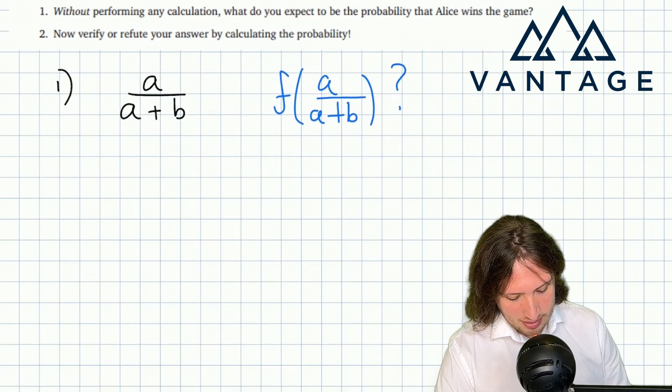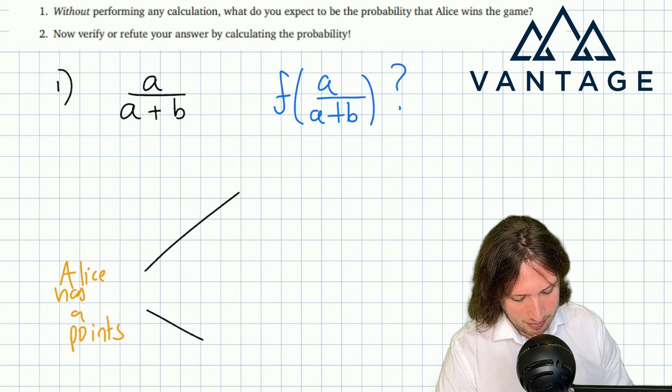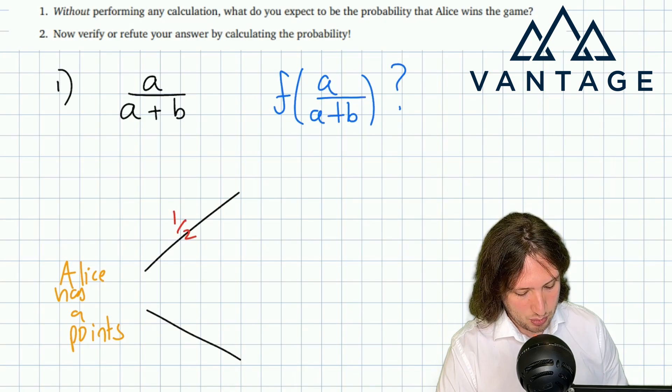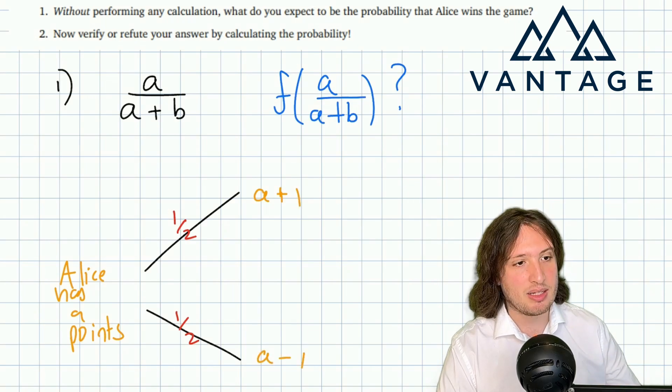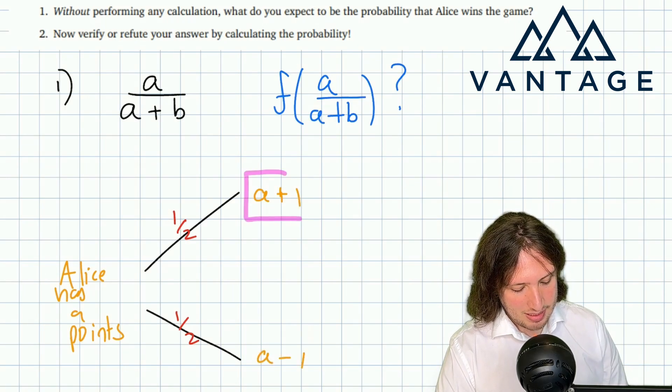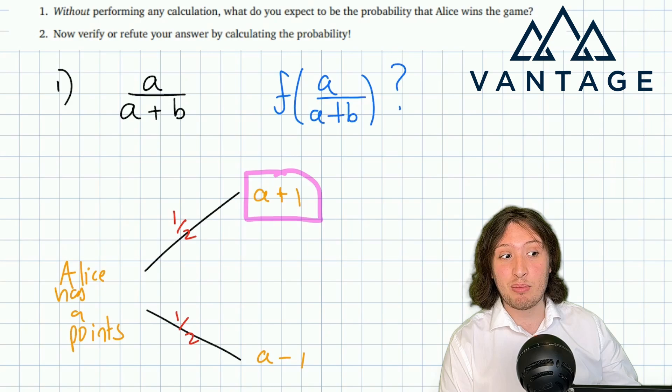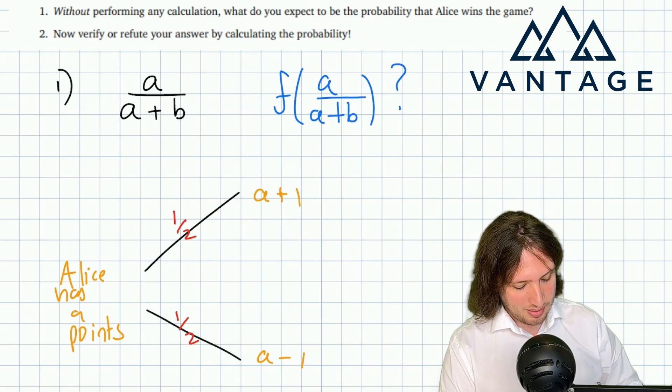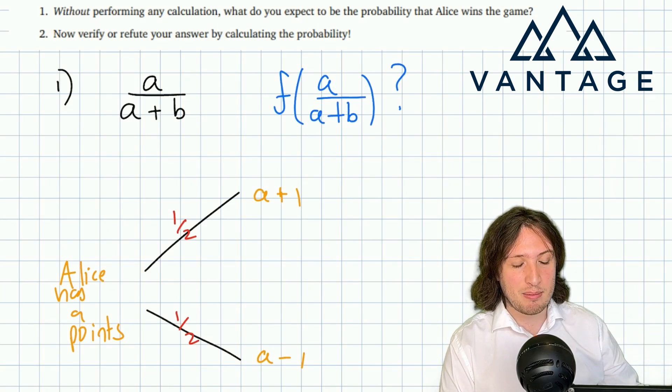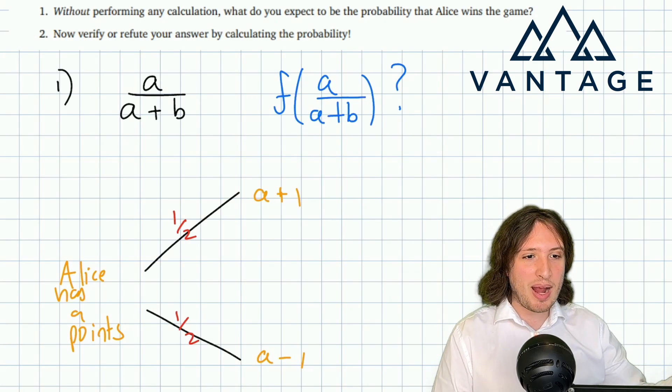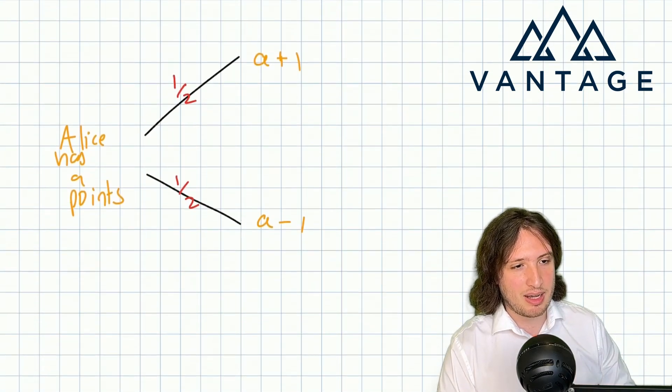In particular, at the start of the game Alice has a points. On that first round there are two things that can happen: Alice can lose a point or Alice can gain a point. I'll write a+1 and a-1 for short. What I'm saying is from that point it's like the original version of the game just where Alice had a+1 points to start and Bob had b-1, or here it's like an original version of the game just where Alice had a-1 points and Bob had b+1. So after one step it's like you're in a slightly modified version of the starting game. That motivates a recursive line of attack.